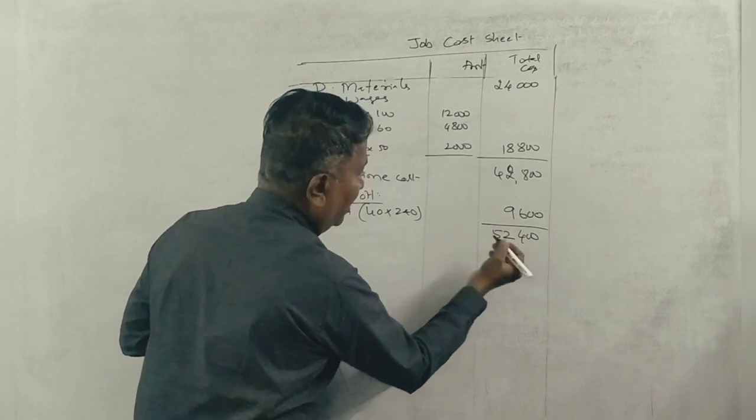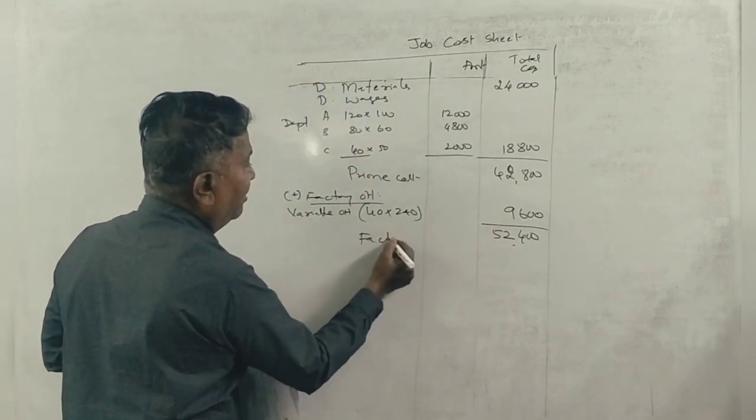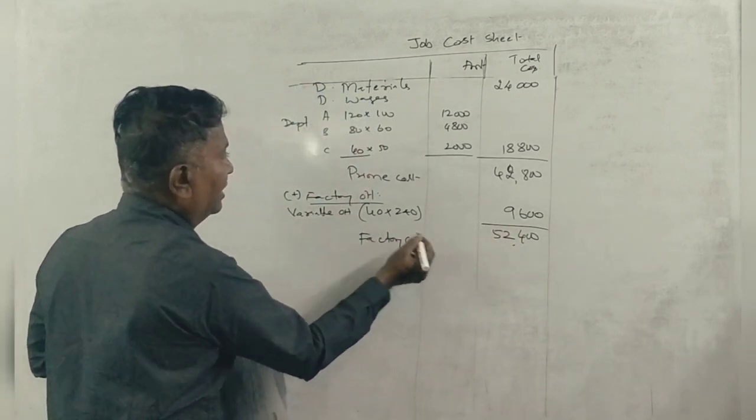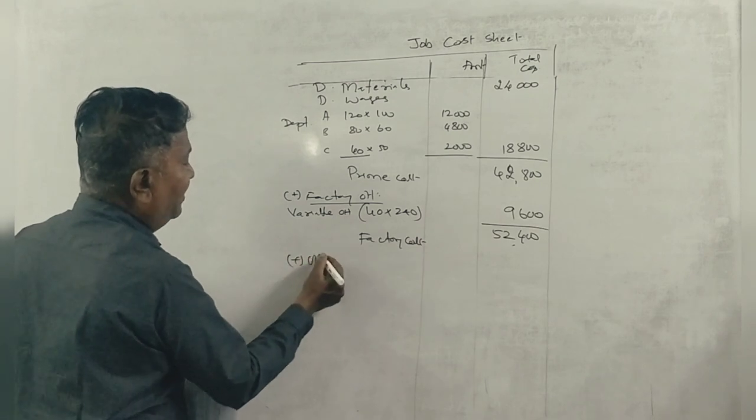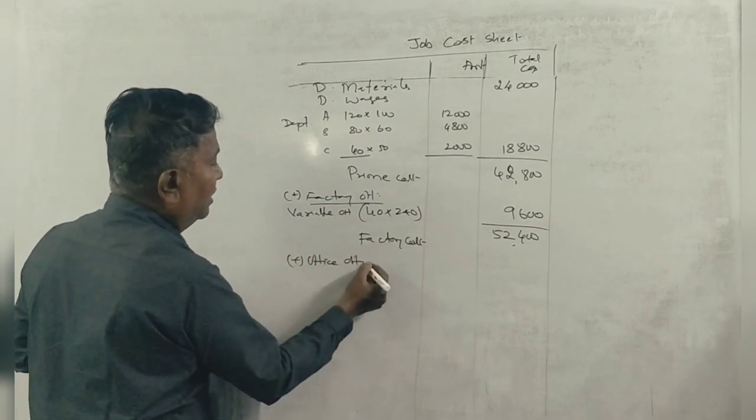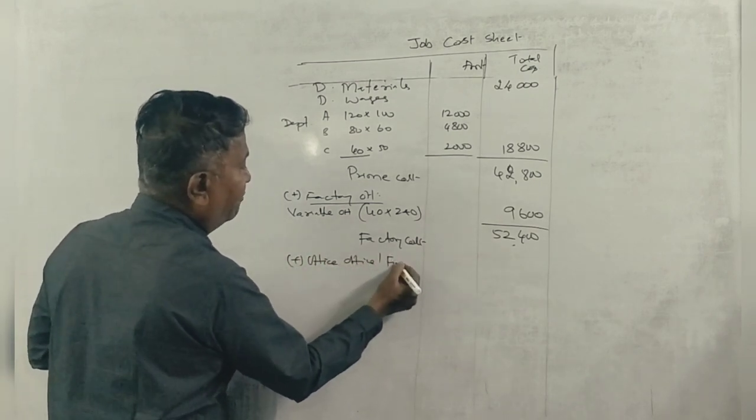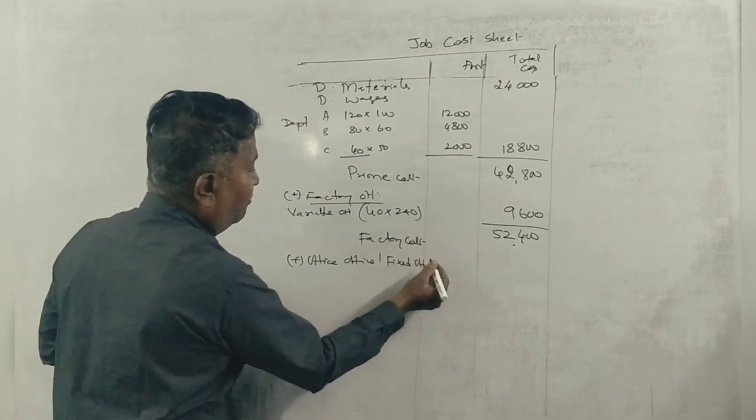So factory cost is ₹52,400. Next, office overheads or fixed overheads.